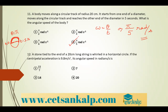Next problem: a stone tied to the end of a 20 centimeter long string is whirled in a horizontal circle. If the centripetal acceleration is 9.8 m/s², find the angular speed in radian per second. We know the centripetal acceleration formula: ac = ω²r, so omega equals the square root of ac divided by r.